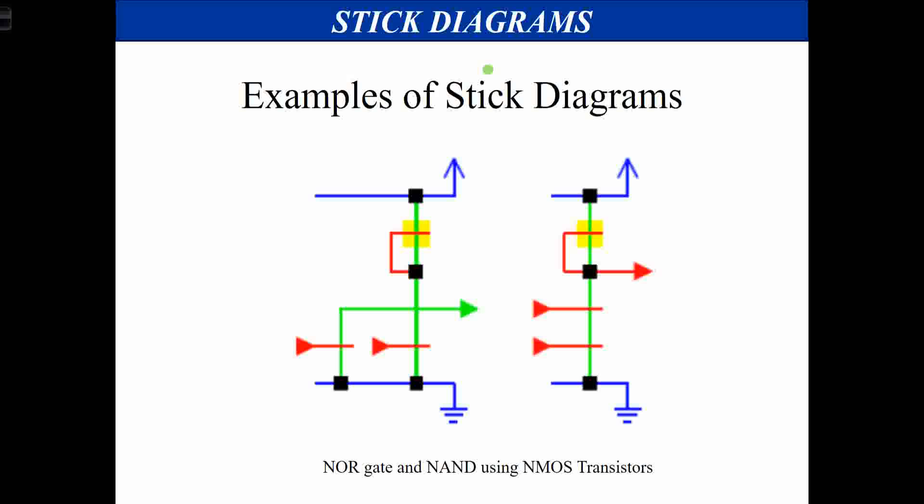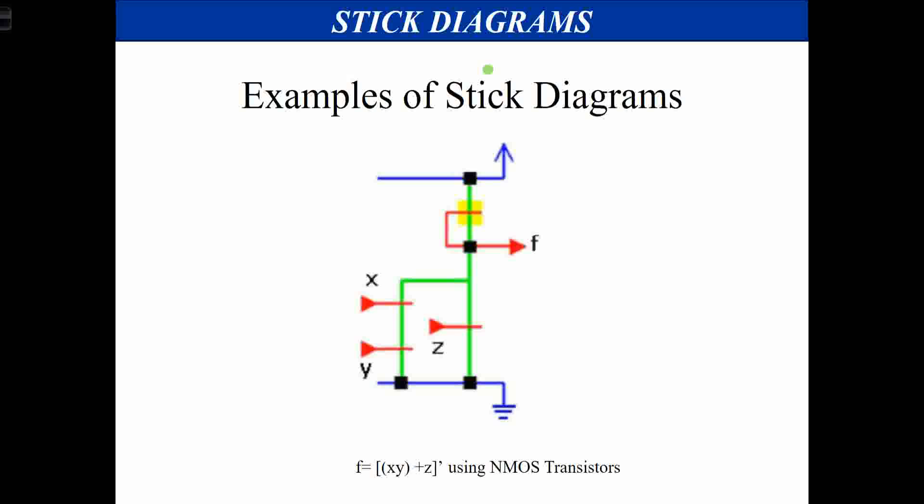For NOR and NAND gates using a depletion mode transistor, the pull-up network can be replaced by a depletion mode NMOS transistor while the pull-down network remains the same. An example function F = (XY + Z)' using NMOS: the pull-up uses an NMOS depletion mode transistor, and in the pull-down network XY are in series and Z is in parallel.